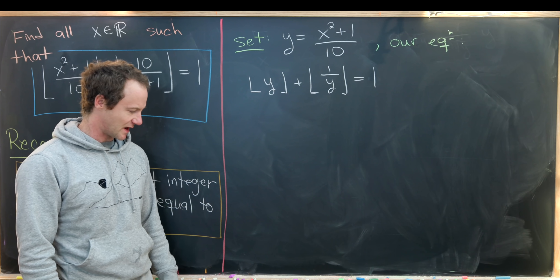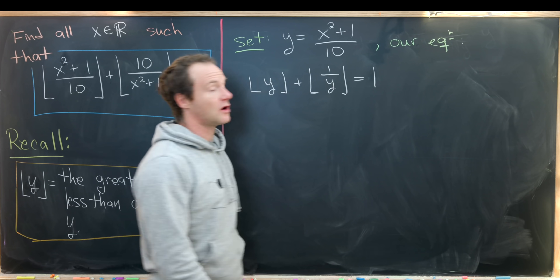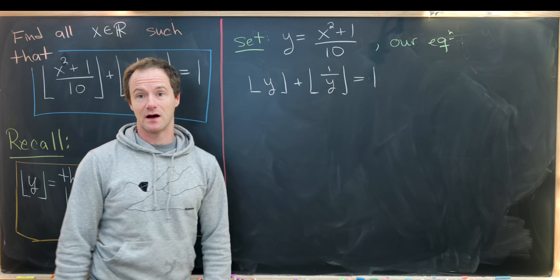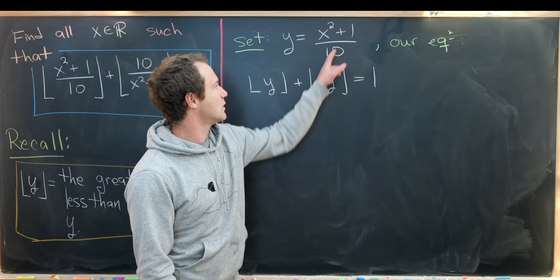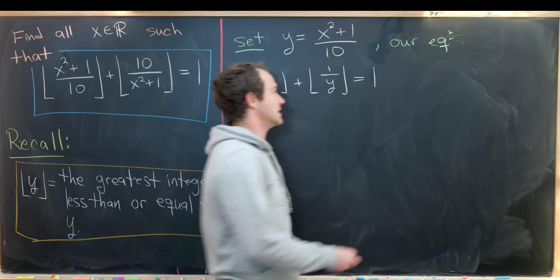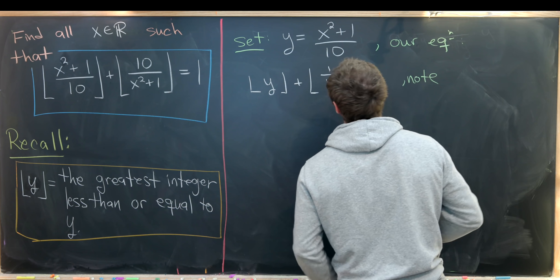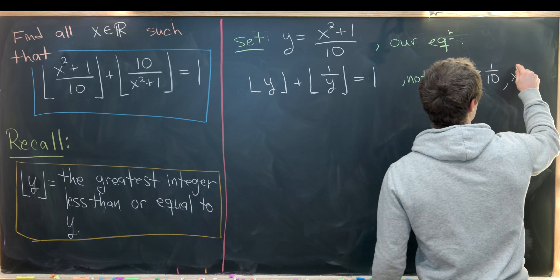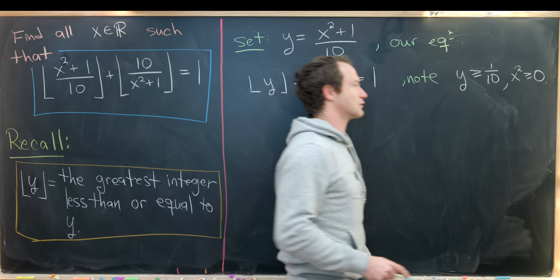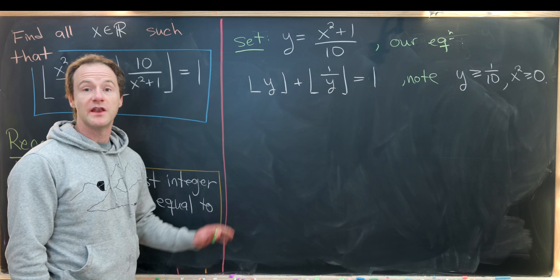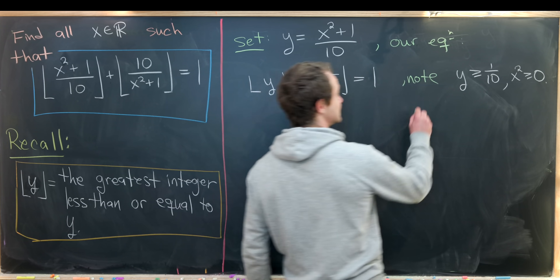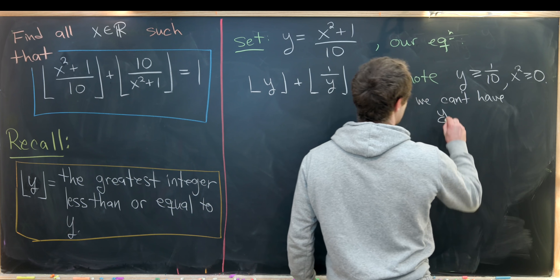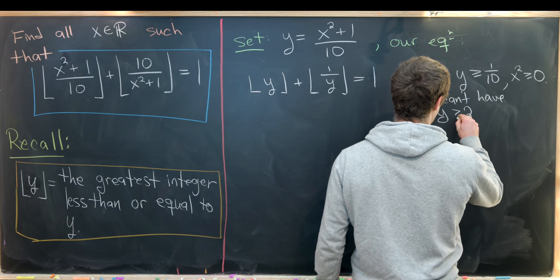We are no longer solving over all real numbers, because this y is always greater than 0 — in fact, always greater than 1/10. So we note that y is greater than or equal to 1/10, since x squared is always greater than or equal to 0 for all real x. Another important thing to note is that we cannot have y greater than or equal to 2.